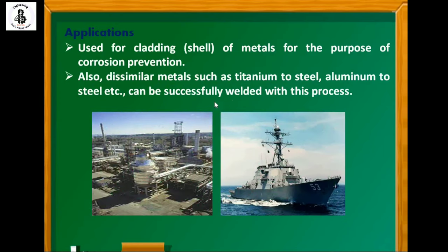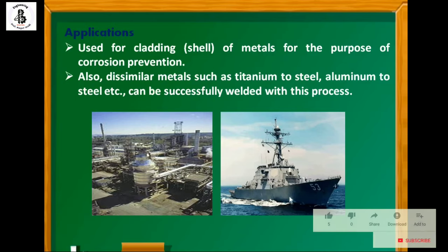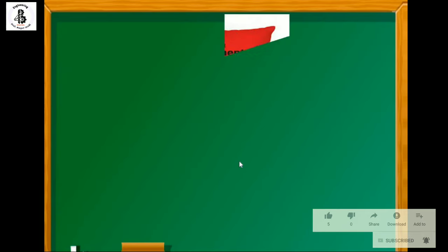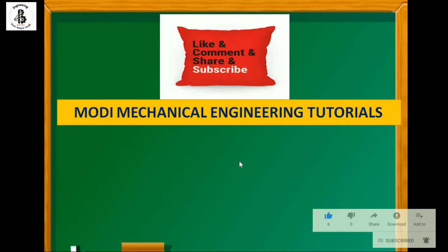Applications include cladding of shell metals for corrosion prevention, and dissimilar metals such as titanium to steel, aluminium to steel, etc. can be successfully welded. There are many applications in shipping industries and chemical industries, such as cladding of metals onto vessels for corrosion prevention. I hope you understood this — if you like this, please subscribe and share Modi Mechanical Engineering Tutorials. Thank you so much and keep watching.